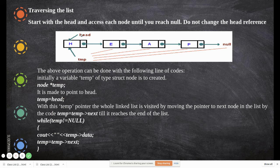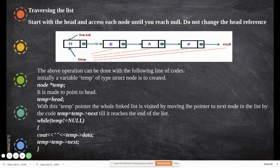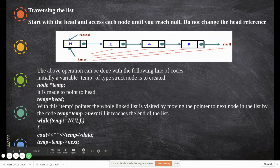We use temp rather than head because if we move head to traverse — printing H, then moving head to E, and so on — we lose the previous nodes. Head must always point to the start of the list. So instead, we assign temp to head and use temp to move through the nodes, keeping the linked list intact.